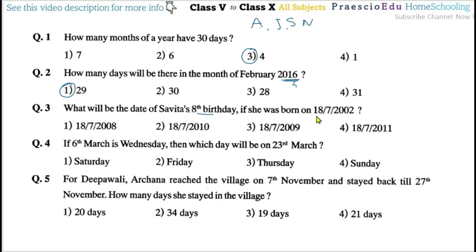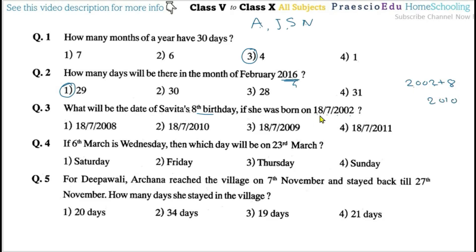Question number three: What will be the date of Savita's eighth birthday if she was born on 18th July 2002? The birthday is on the 18th, so 2002 plus 8 equals 2010. The date stays the same — 18th July 2010 — so option number two is correct.